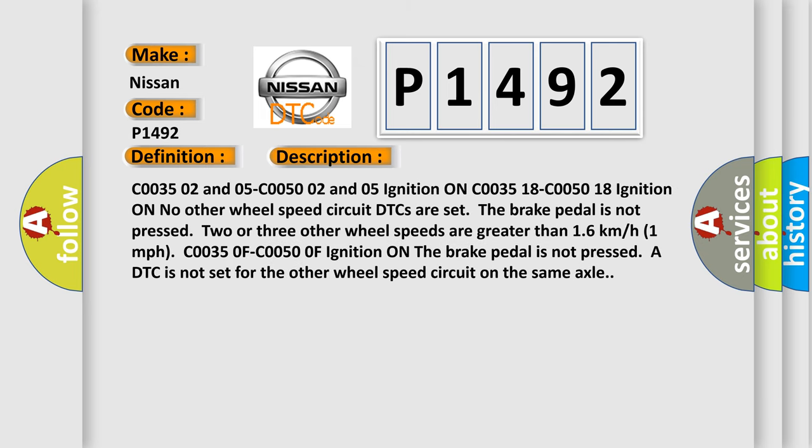C0035 02 and 05, C0050 02 and 05. Ignition on, C0035 18, C0050 18. Ignition on, no other wheel speed circuit DTCs are set. The brake pedal is not pressed. Two or three other wheel speeds are greater than 1.6 km/h (1 mph). C00350F, C00500F. Ignition on, the brake pedal is not pressed. A DTC is not set for the other wheel speed circuit on the same axle.